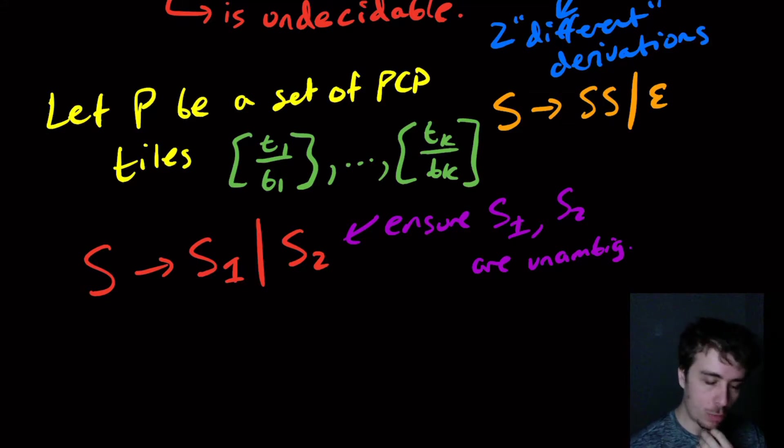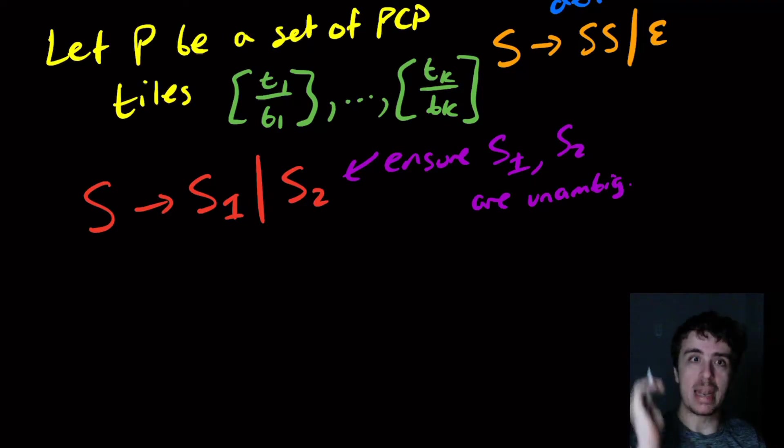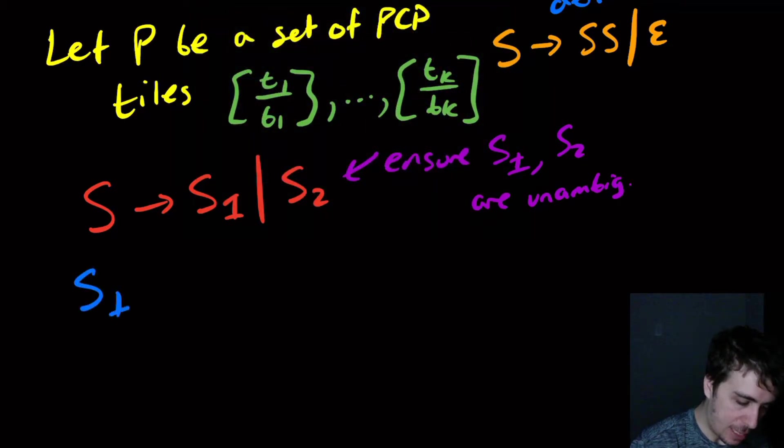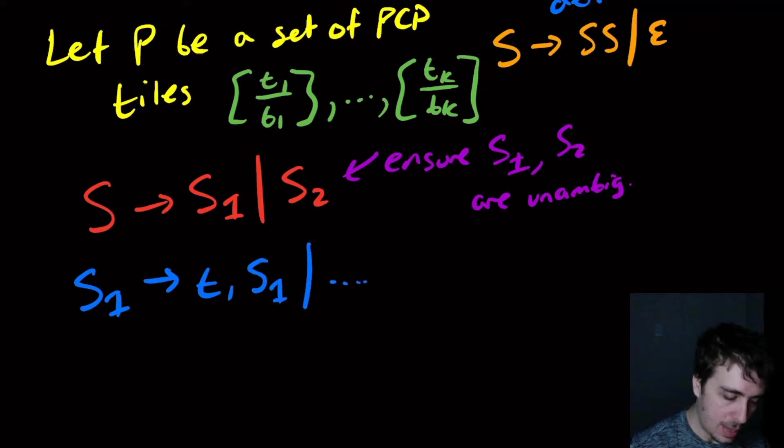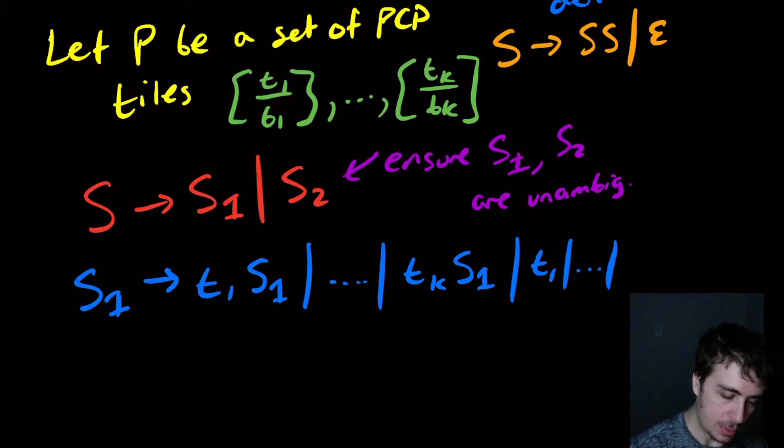So what are we going to do? I want to force S1 and S2 to make some string that's exactly the same for both if and only if there is a match with the original set of tiles. One approach you might try: I'm going to have S1 make t1, it could choose the first tile and then choose some more, or it could choose tk and then some more tiles, or it can just choose a single tile once the recursion is done. So t1 up to tk.